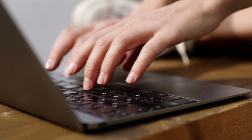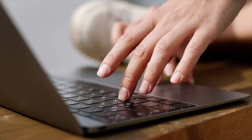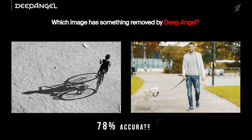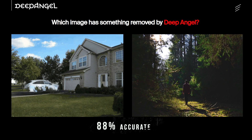We hosted it online so that anyone with internet access in the world could come to this experiment. We had over 15,000 people participate. What we see is that people on the first image they see are 78% accurate on average. By the 10th image they see, people were 88% accurate.